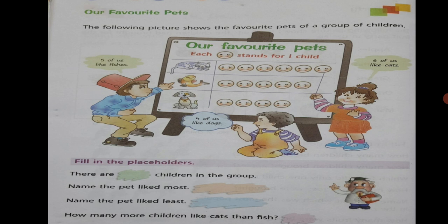Jitni smileys hain utne hi class mein bachche hain — 15. Next question: 'Name the pet liked most.' Kaunsa pet hai jo bachcho ko sabse zyada pasand hai? Obviously jis pet ki photo ke aage sabse zyada smileys hongi. Sabse zyada smileys hain six, aur six kis ke aage hai? Cat ke aage. So cat is the pet liked most. 'Name the pet liked least' — sabse kum smileys kis ke paas hai? Dog ke paas — so dog is liked least.